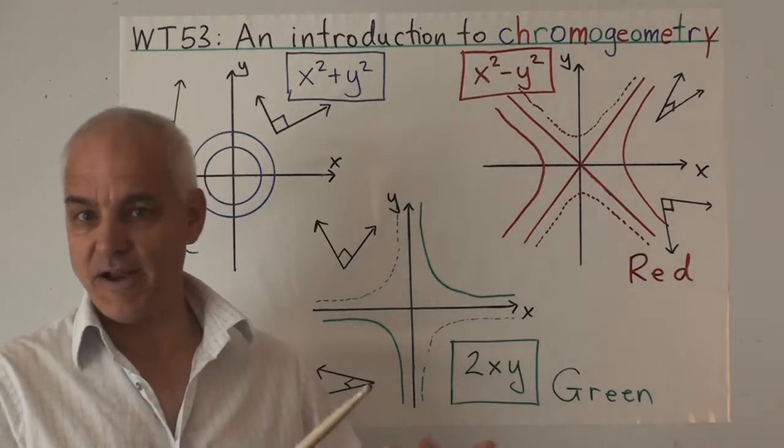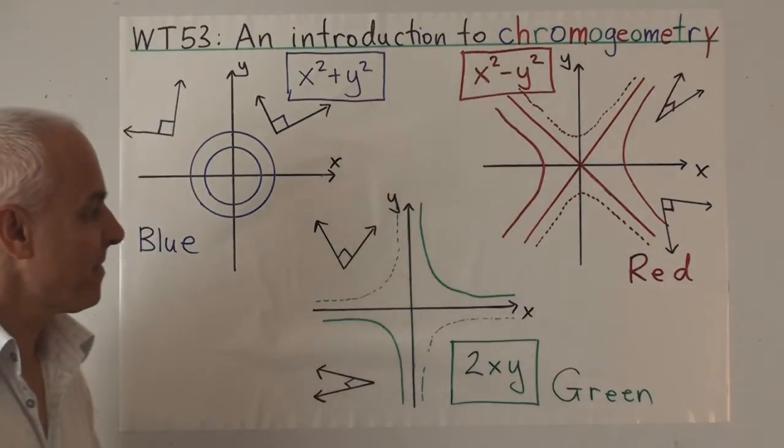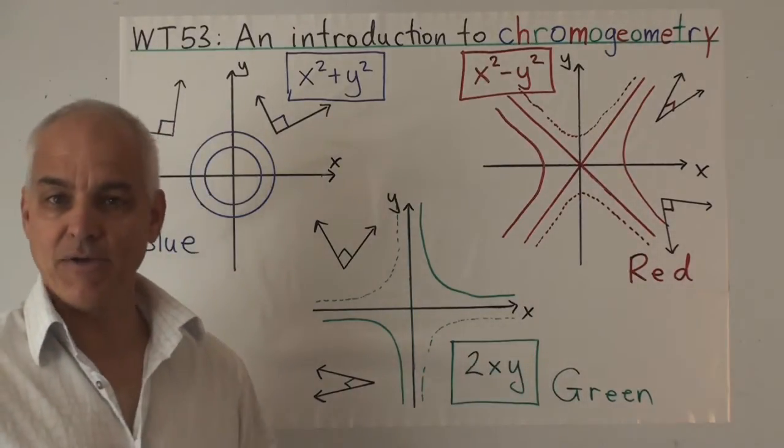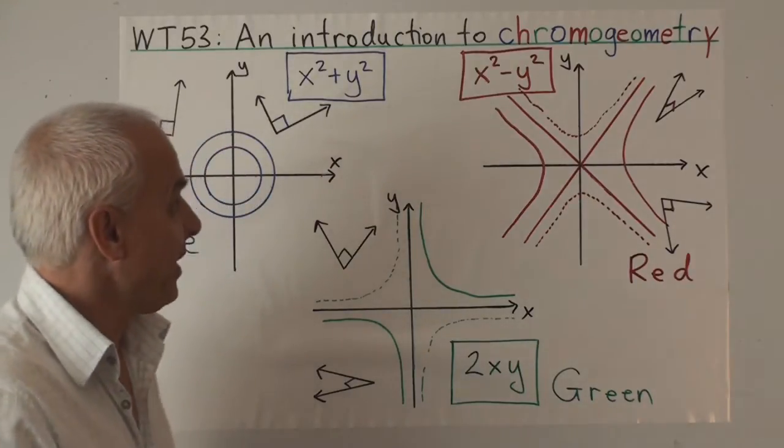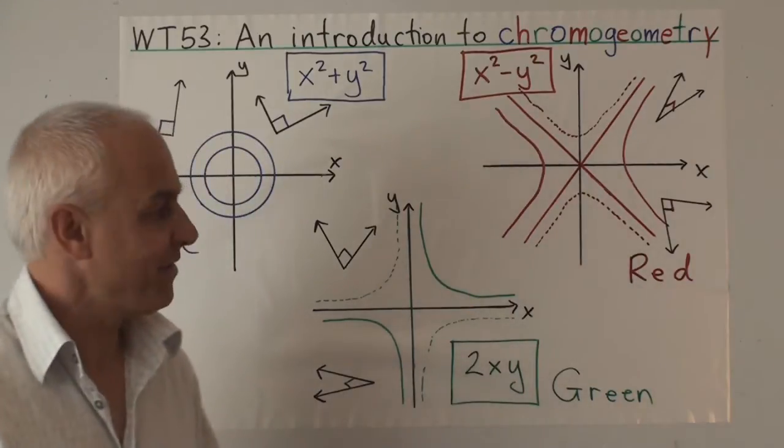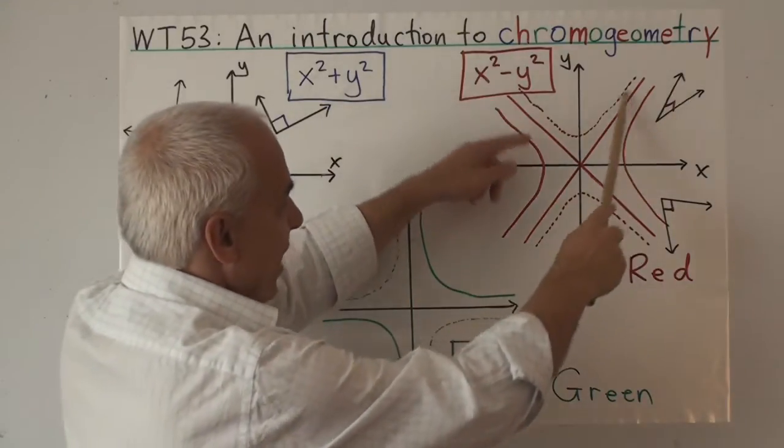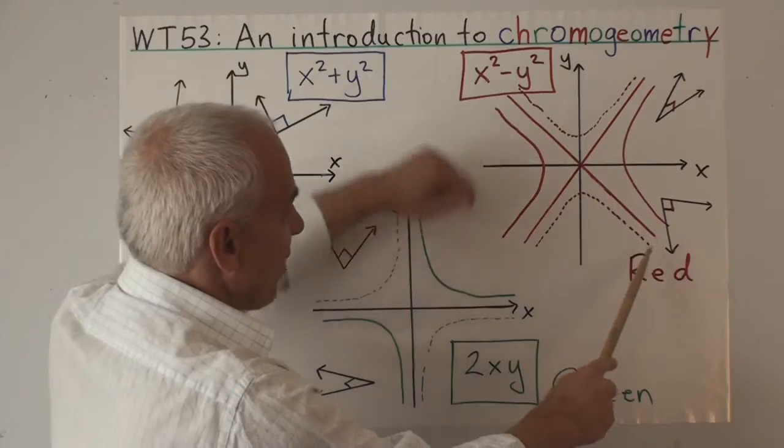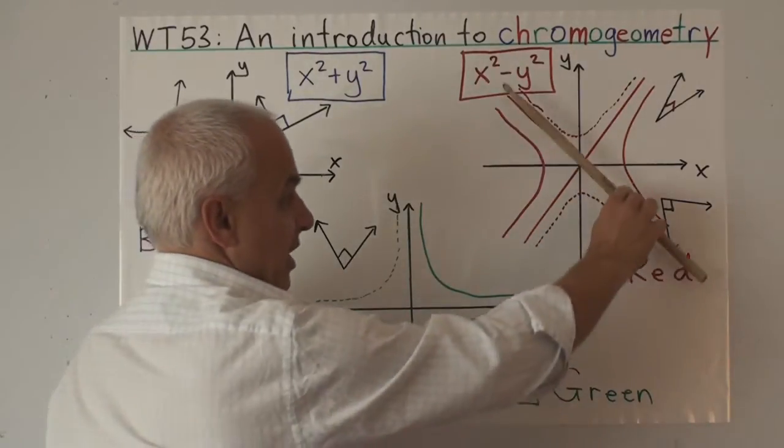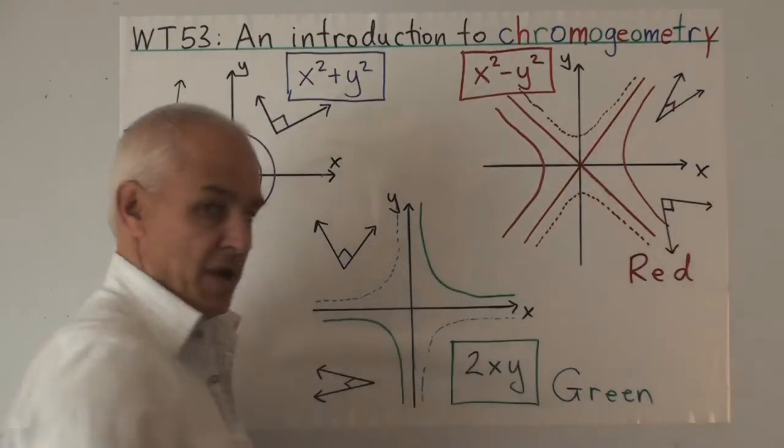The other two geometries are the red and green ones that we've been talking about in the last few videos here. The red geometry is controlled by the quadrance x² - y², and the circles look like rectangular hyperbolas of this kind or this kind, or the null circle consists of those two null lines.